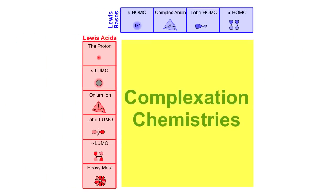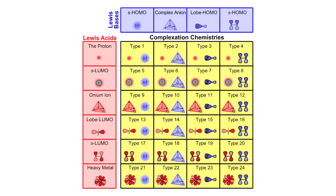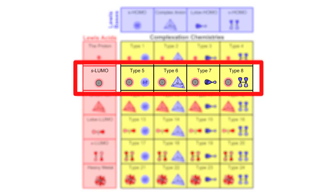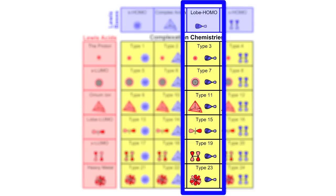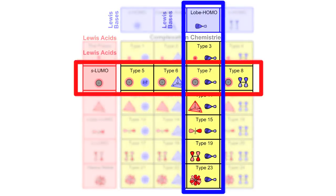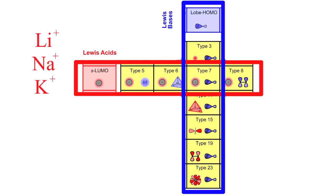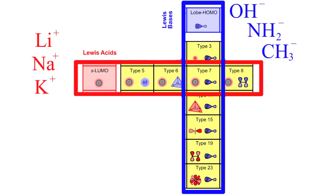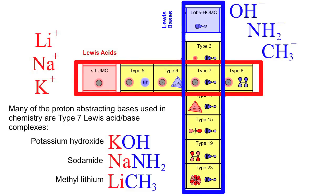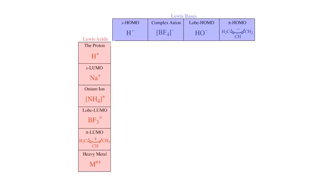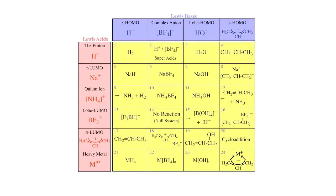Lewis acids react with Lewis bases, so our four types of Lewis base can interact with our six types of Lewis acid, giving rise to 24 types of Lewis acid-base interaction chemistry. For example, taking the S-LUMO Lewis acids and the lobe-HOMO Lewis bases gives rise to Type 7 Lewis acid-base complexes. The S-LUMO Lewis acids include cations such as lithium ion, sodium ion and potassium ion. The lobe-HOMO Lewis bases include hydroxide ion, nitride ion and carbide ion. These interact to give many of the bases of chemistry such as potassium hydroxide, sodamide and methyl lithium. Many of the bases of chemistry are Type 7 complexes. We can add real chemical species to our Lewis acid-base interaction matrix.